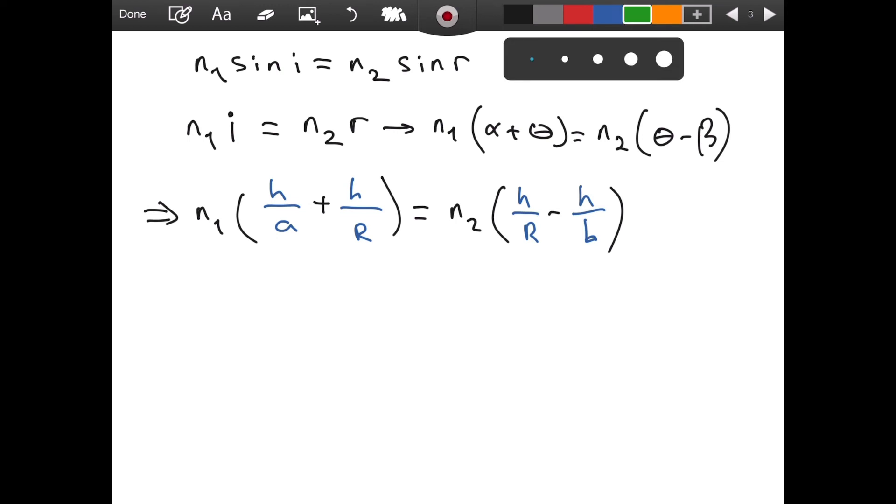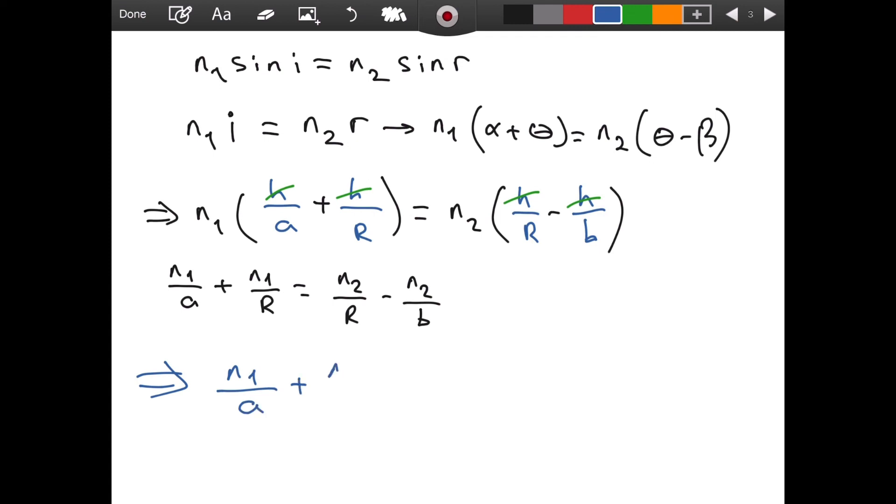So we see a great thing. We see that h cancels. This is great because this means that the formula that we are about to derive is independent of the point where the incoming ray touches the refractive surface. And now, if I distribute the parentheses, I am going to have n1 over a plus n1 over R is equal to n2 over R minus n2 over b. And this is the formula that we were hoping to find. This explains the refraction case for spherical surfaces.